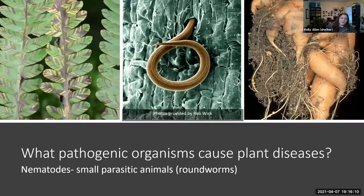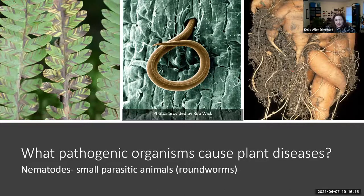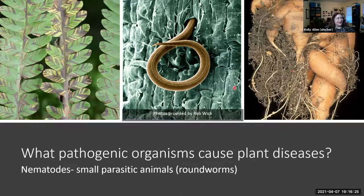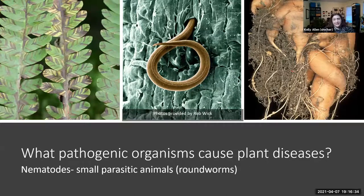Nematodes are sort of the last group of pathogens. Even though they're not exactly microbial, they're small parasitic animals or roundworms. They also can cause some really striking symptoms of disease, including leaf banding and root gall formation, which again results in terrible crop losses.